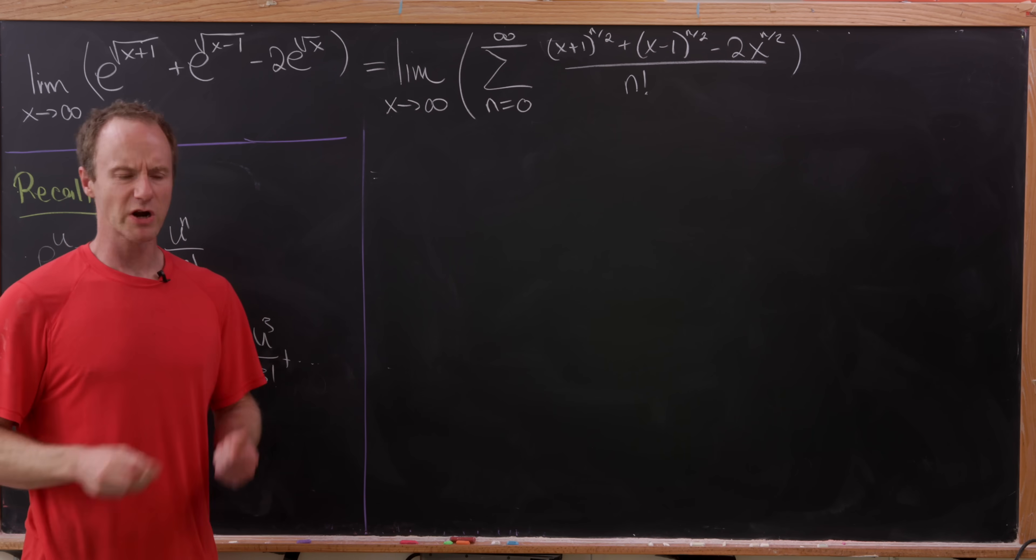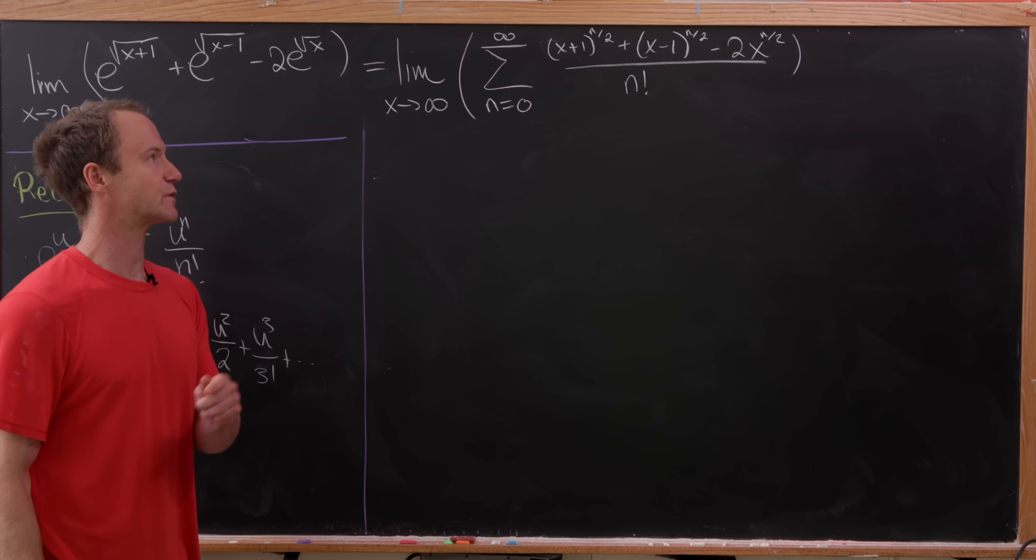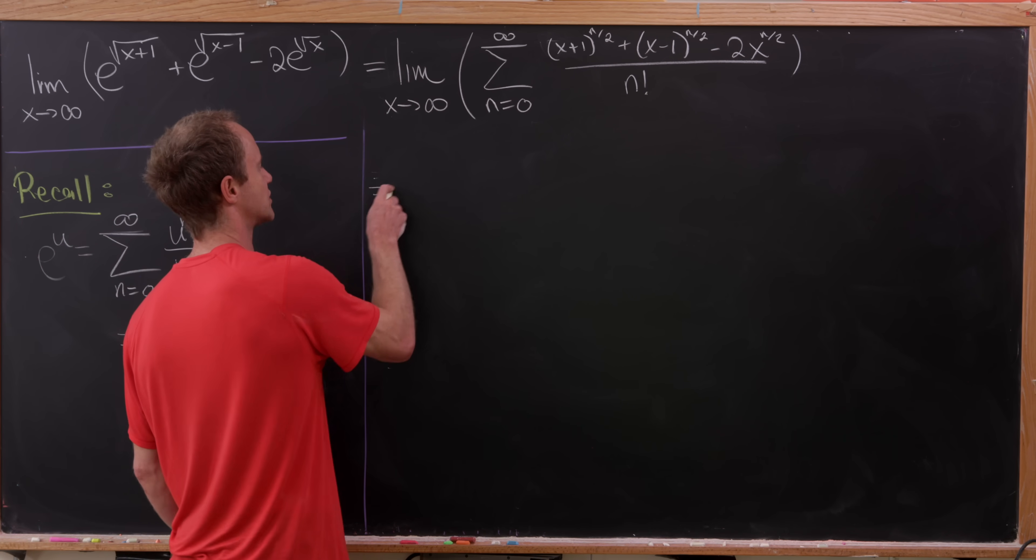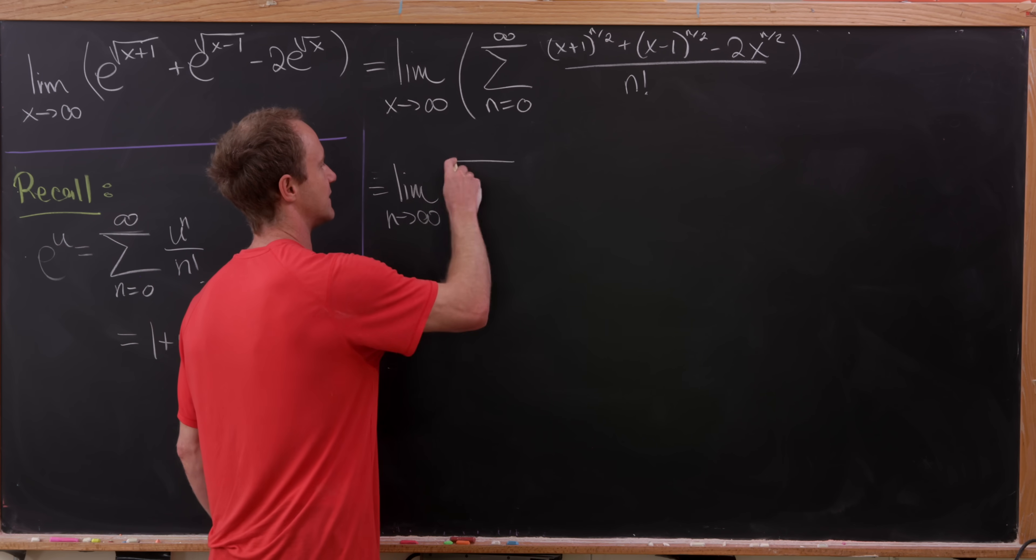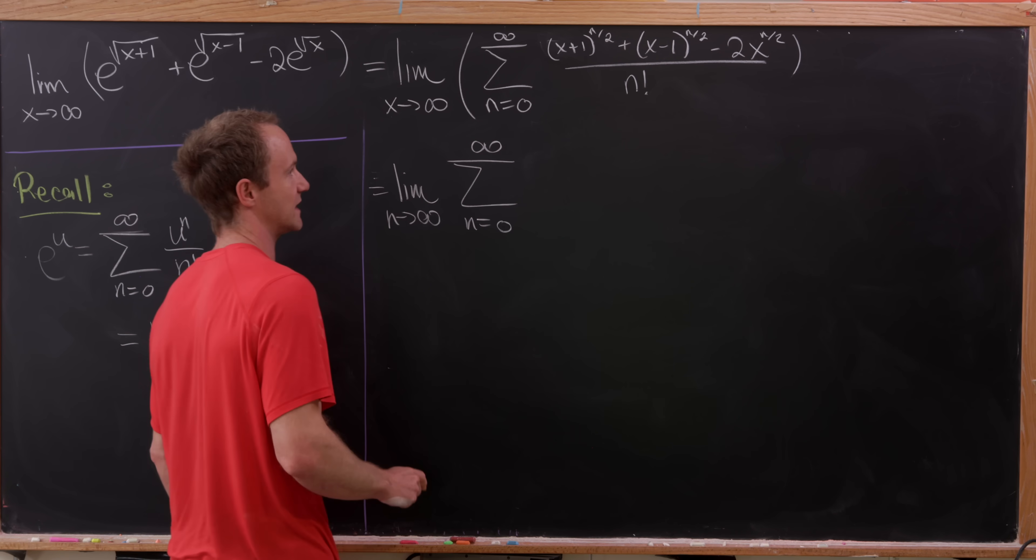Okay, great. Now we're going to do a trick here for our simplification where we multiply the numerator as well as the denominator by 1 over x to the n over 2 and we'll talk about why we do that. So now we have our limit as n goes to infinity. We have our sum as n goes from 0 to infinity.